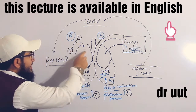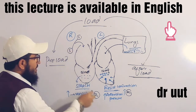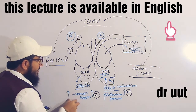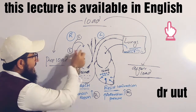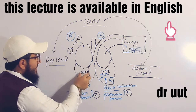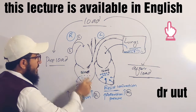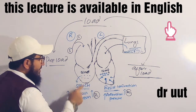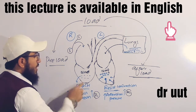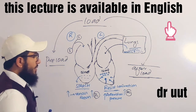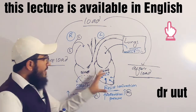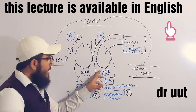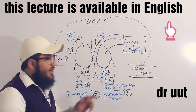More venous return to the ventricles means more pressure on the ventricular wall, which increases preload. Less venous return to the ventricles means less pressure on the ventricular wall, which decreases preload.